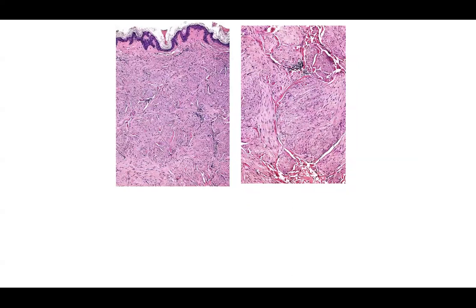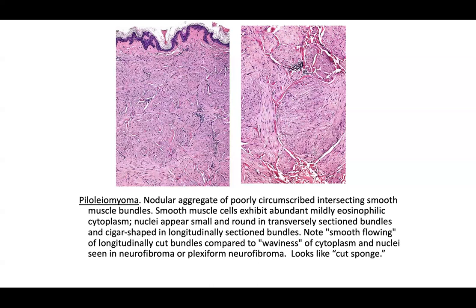Inflammatory or neoplastic? Depending on the site, you may think this is smooth muscle, since sites like the areola, nipple, and scrotum typically have smooth muscle bundles. You see fascicular architecture with elongated nuclei within strands — a smooth muscle bundle appearance that is ill-defined. If neoplasm, consider a piloleiomyoma — leiomyomas derived from the arrector pili muscle — or an angioleiomyoma derived from vascular smooth muscle.